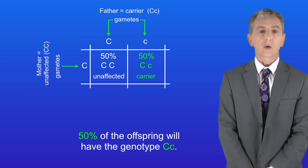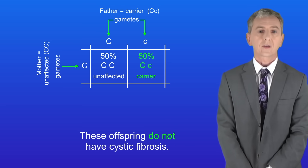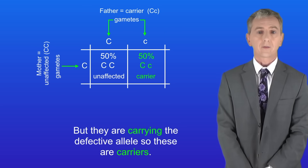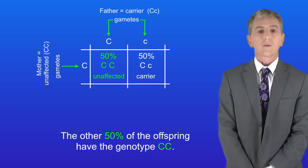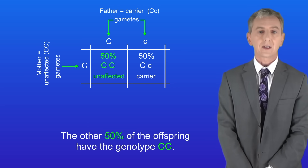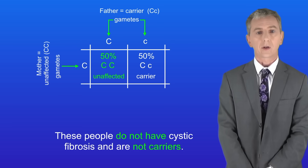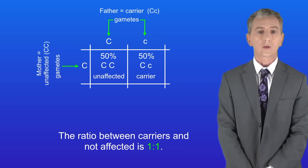50% of the offspring will have the genotype capital C lowercase c. These offspring do not have cystic fibrosis but they are carrying the defective allele, so these are carriers. The other 50% of the offspring have the genotype capital C capital C. These people do not have cystic fibrosis and are not carriers. The ratio between carriers and not affected is one to one.